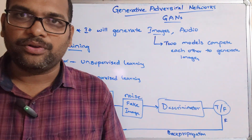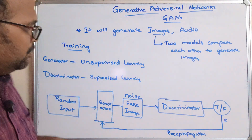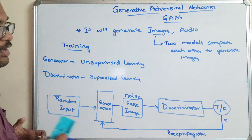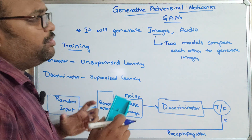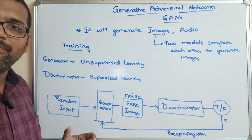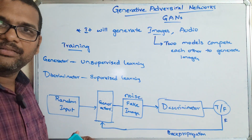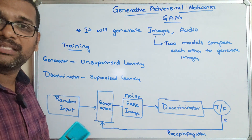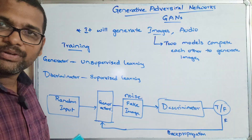The final output from a GAN is images that look like realistic images. This is how the working of a generative adversarial network is done.